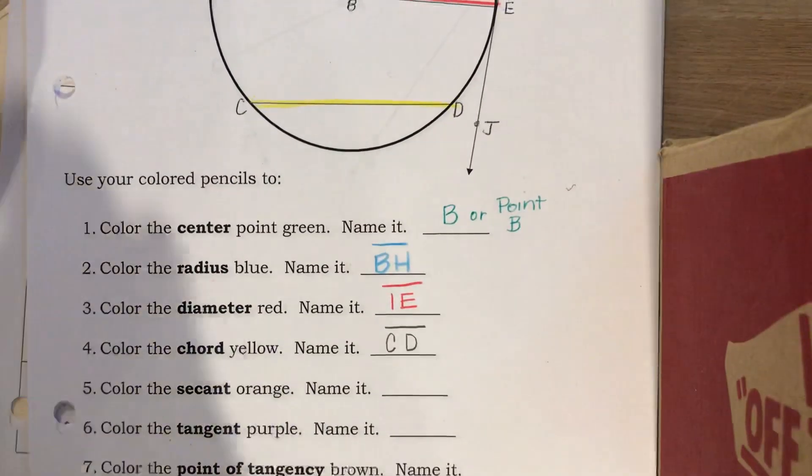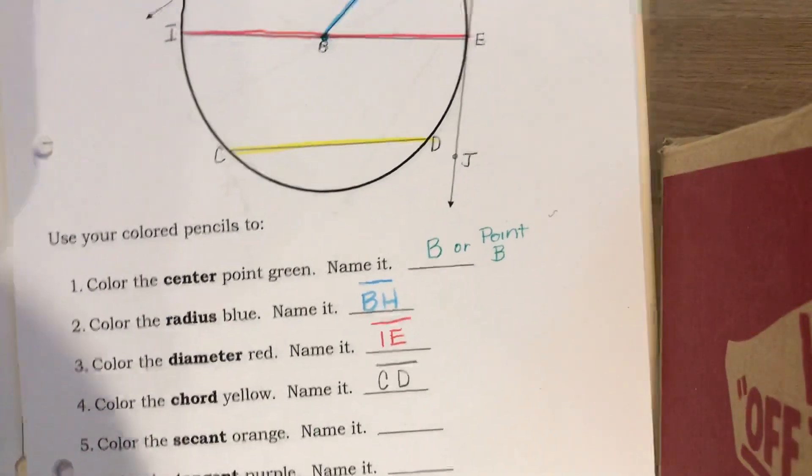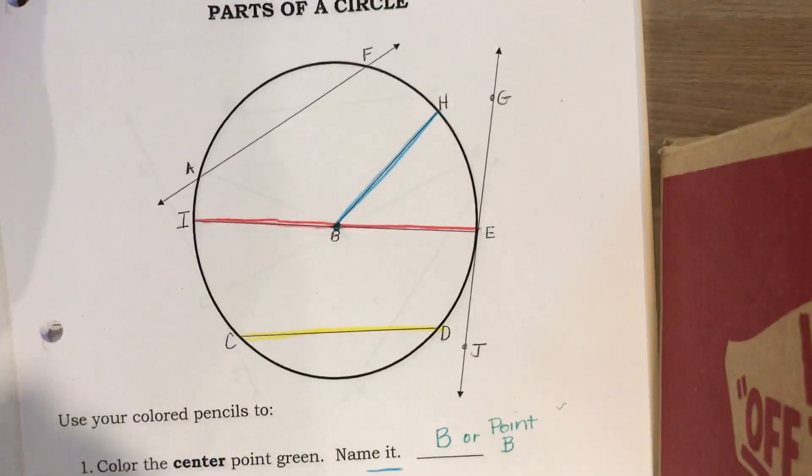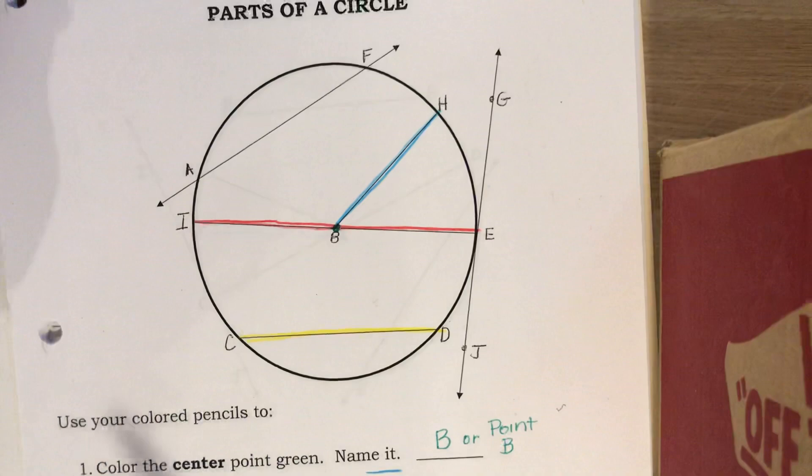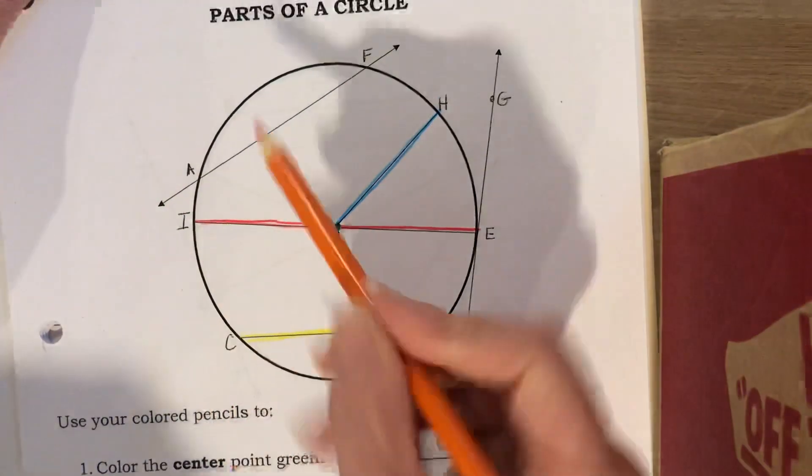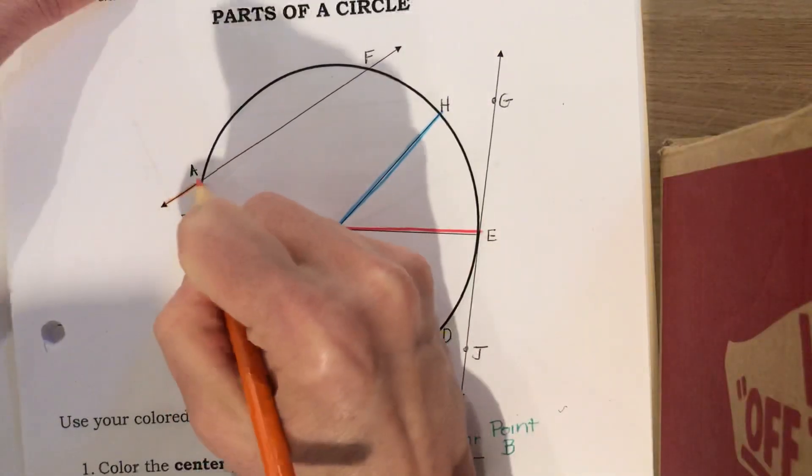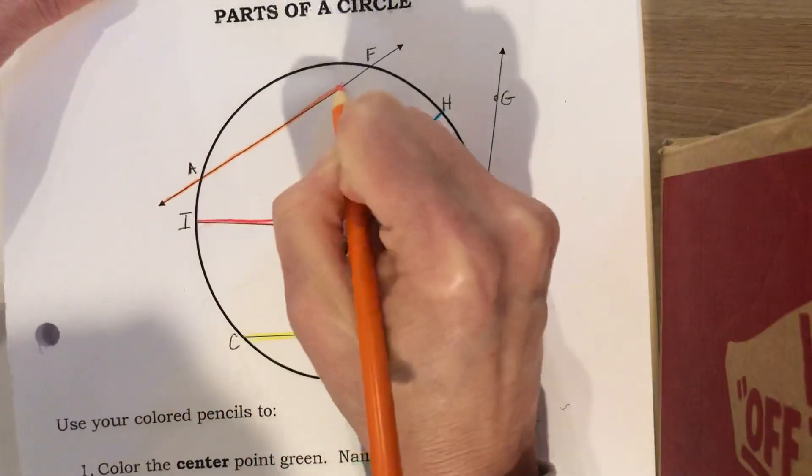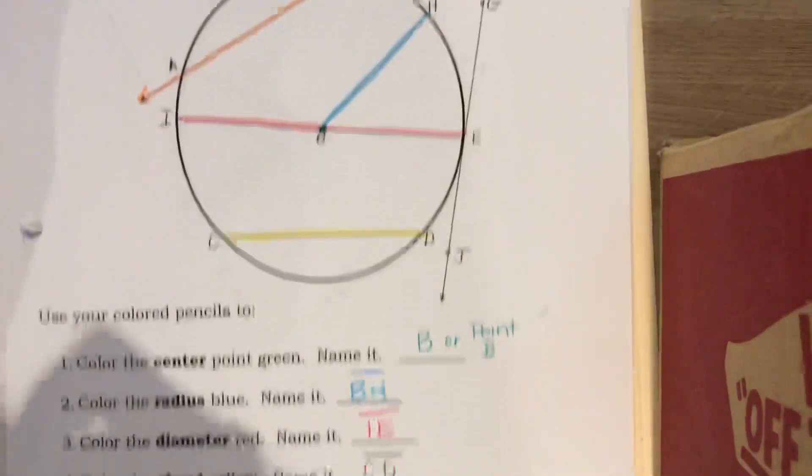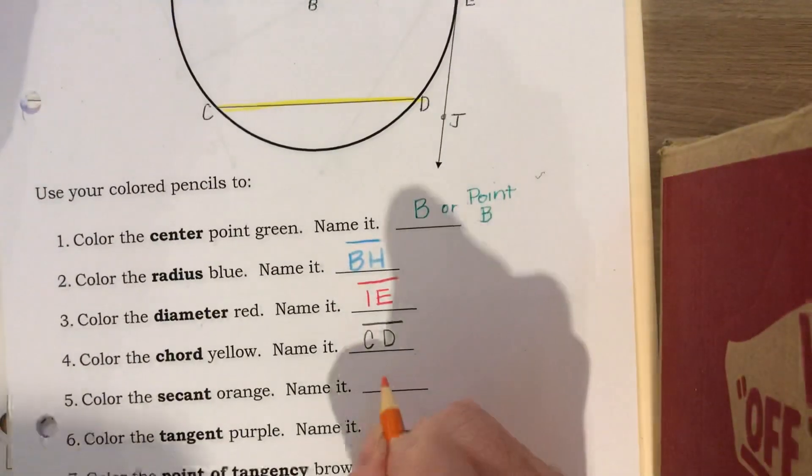Number five says we are going to now color the secant orange. If we look at our picture, a secant is a line that goes through the circle twice. There's not too many options left. Let's take a look at AF. AF is a line and it goes through the circle twice, once at A and once at F. So naming the secant would be AF, but we have to make sure we have our proper notation with a line on top.